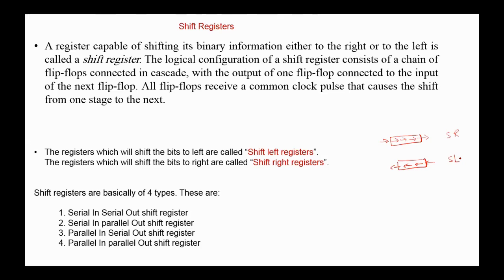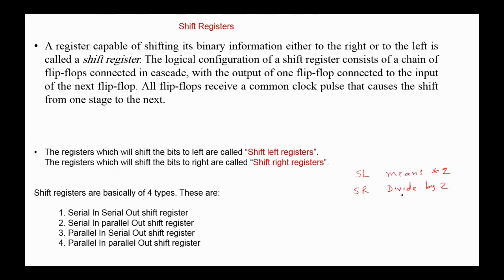Shift registers are used in different computer components for different purposes. For example, shift-left means multiply by two, and shift-right means integer divide by two. Shift registers are basically four types.